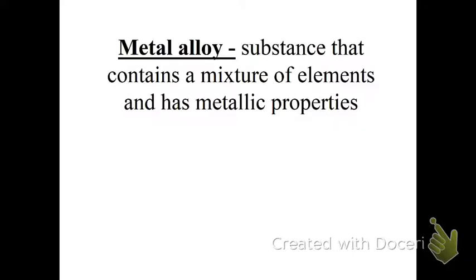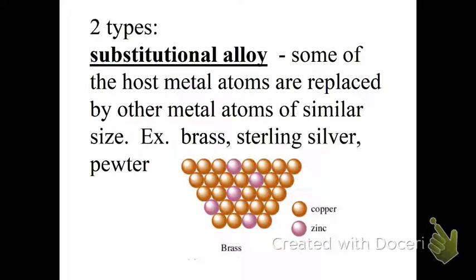There are two types of metal alloys. There's a substitutional alloy, which basically some of the host metals are replaced by similar metals, meaning similar size. Example would be brass and silver and pewter. If you look at where they're located on the periodic table, copper and zinc are right next to each other, so they have a similar size. They're basically just substituting some of the copper with zinc to make it less likely to oxidize.